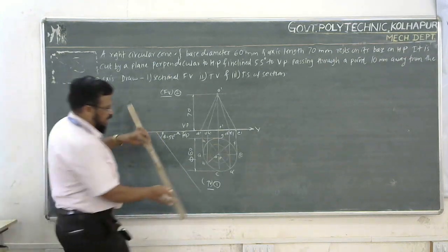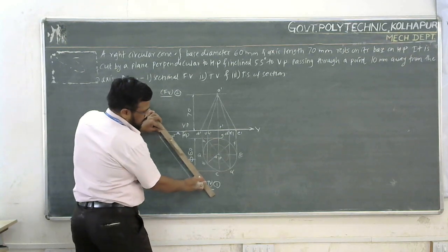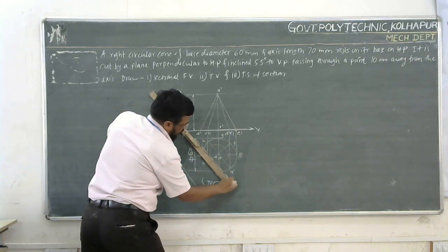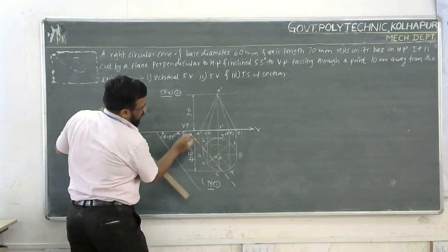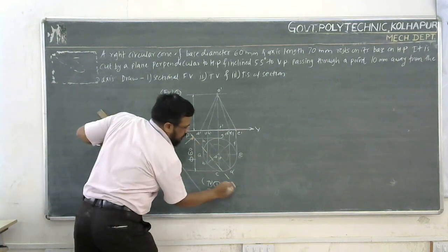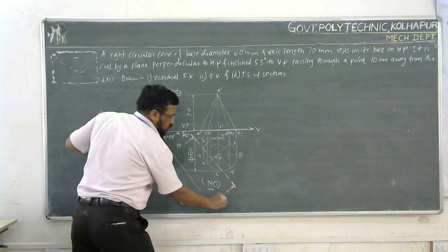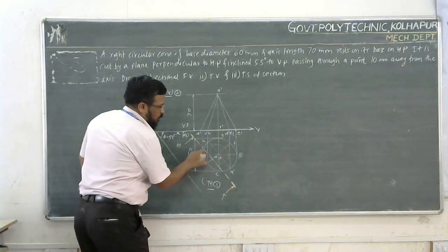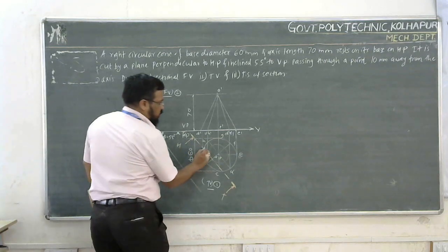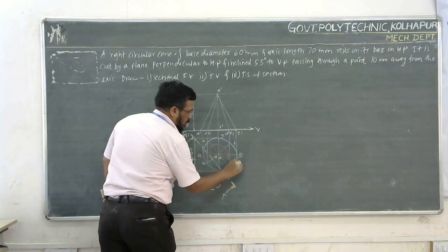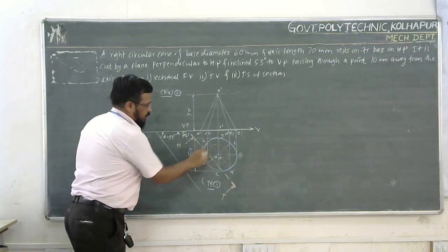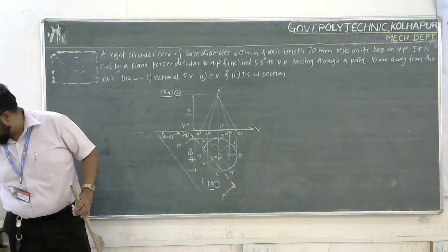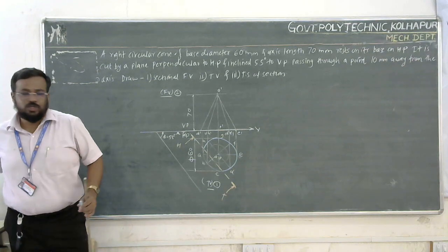We use the angle relative to XY line. This angle is 55 degrees. This is the cutting plane line in top view. Now we need to find where this cutting plane intersects the cone.